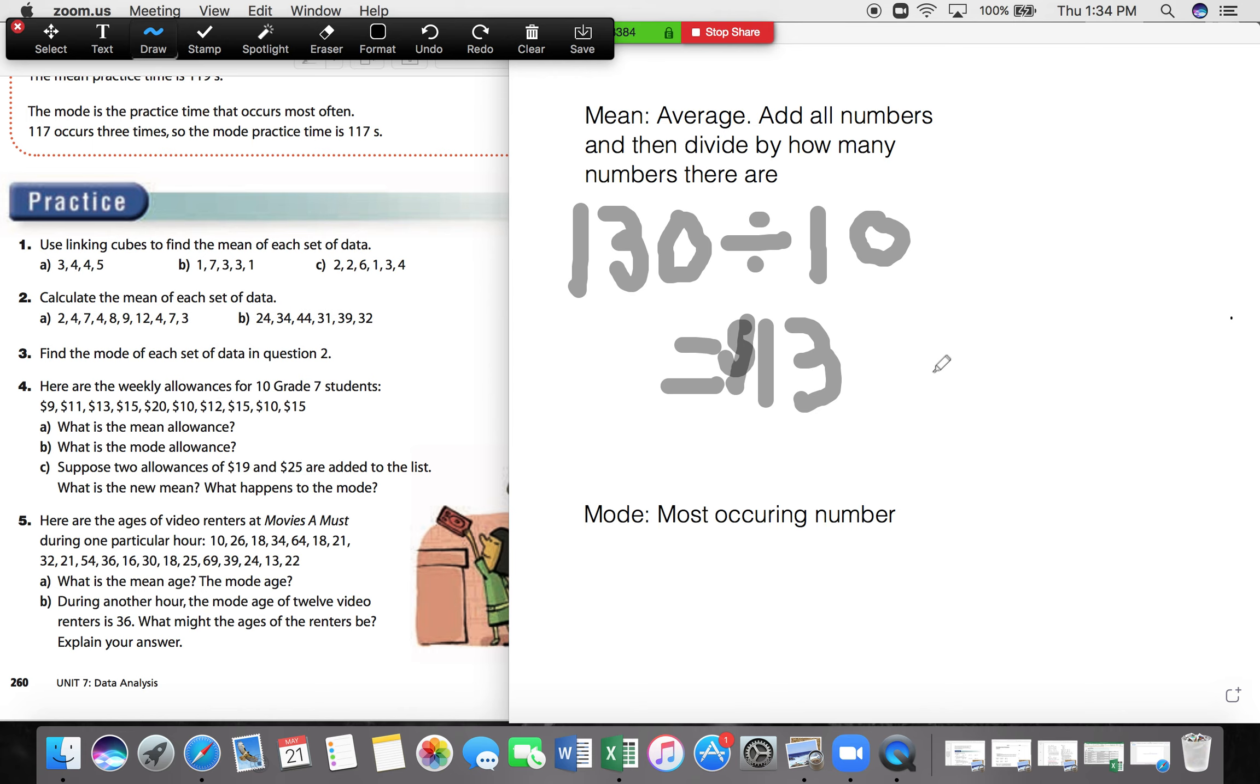Wonderful. Part B, what is the mode allowance? Well, if we look down here in part B, our mode is the most occurring number. So all you have to do here is look through your set of data.